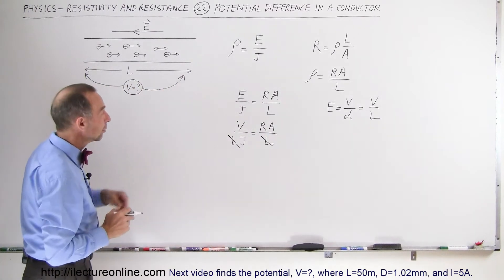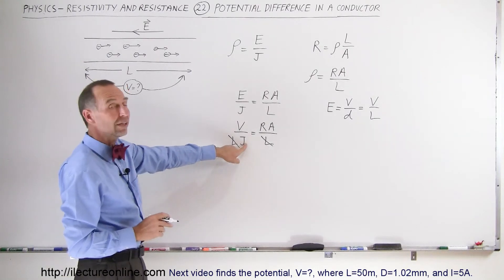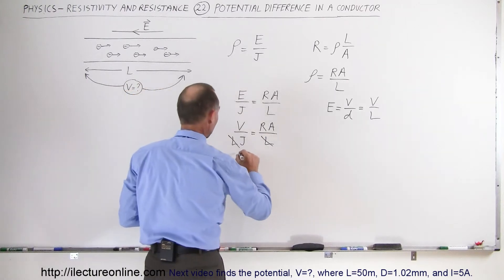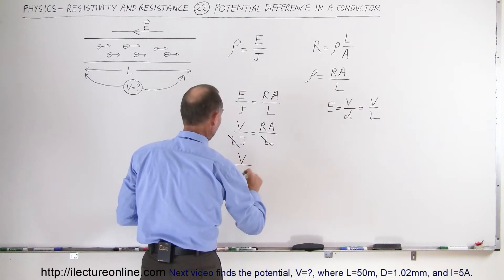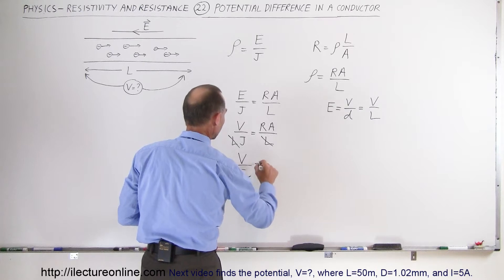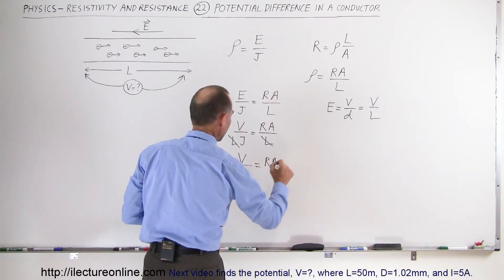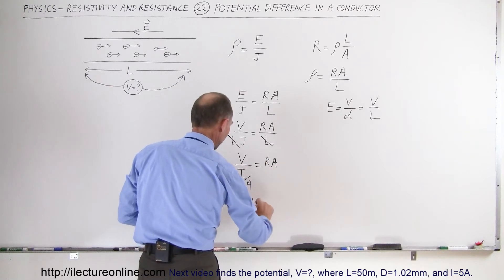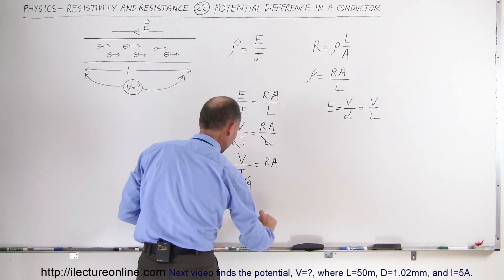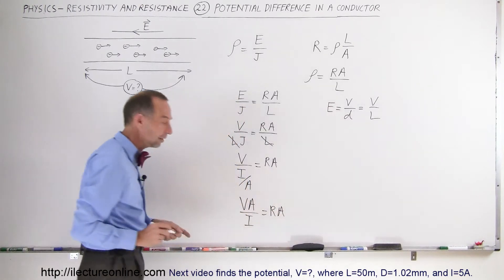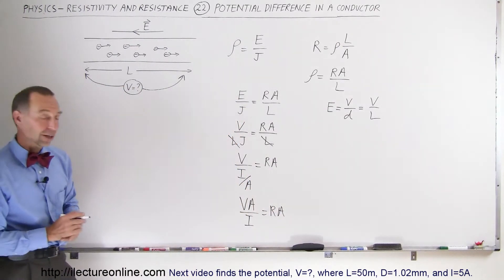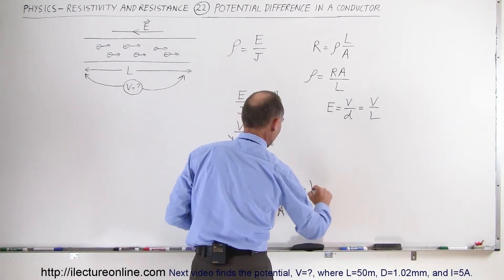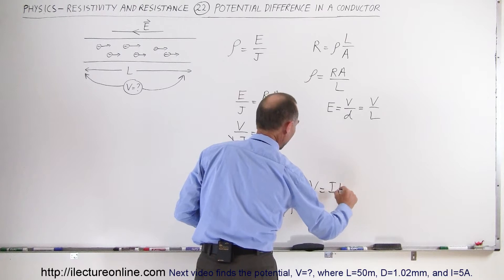Next, the current density can be expressed in terms of current divided by the cross-sectional area. So V divided by the quantity current divided by the cross-sectional area is equal to R times A. We can rewrite this so that the potential difference times the cross-sectional area divided by the current is equal to the resistance times the cross-sectional area. Then you can see that the cross-sectional areas cancel out, and when we move I over, finally we can say that V is equal to I times R.